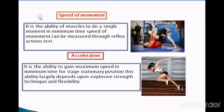The next type is speed of movement. It is required in sports such as boxing, wrestling, and swimming. This type of speed completely depends on skill, technique, strength, and flexibility. Muscles perform a single movement in minimum time. As you can see in the picture, the player applies technique in a single movement in minimum time.